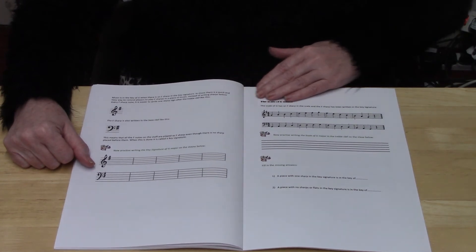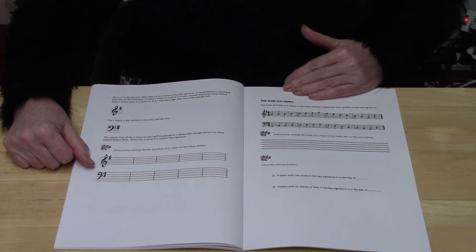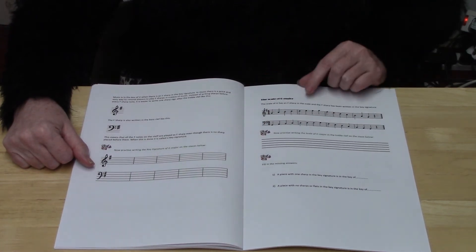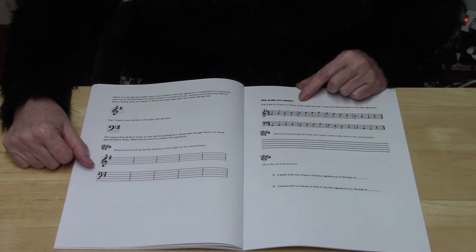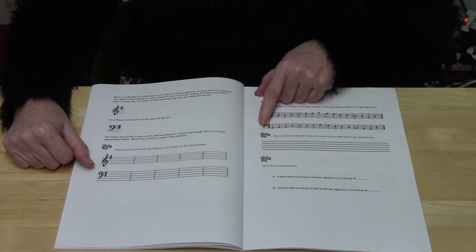And then you've got a little exercise that shows you the scale of G major. So again you've got your eight notes with the scale going up to the top and then down again, first in the treble clef, then in the bass clef.